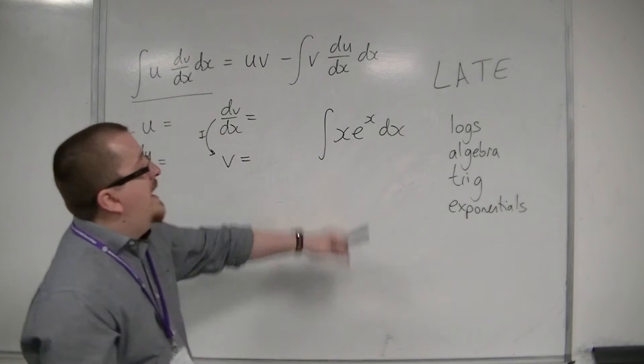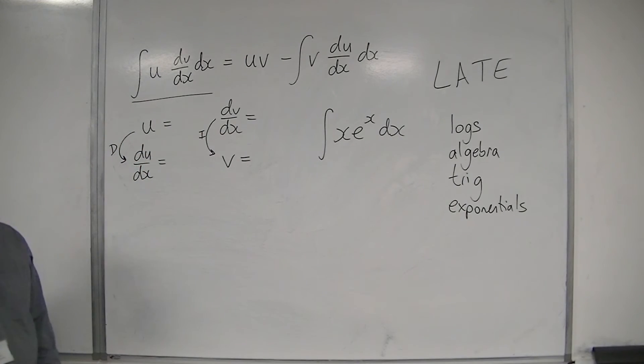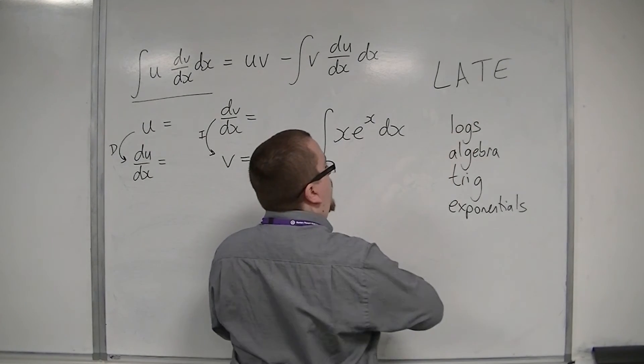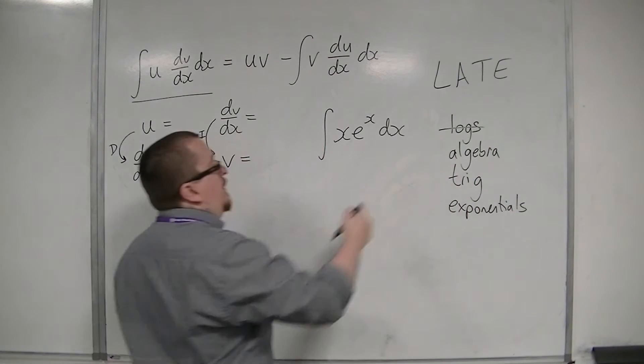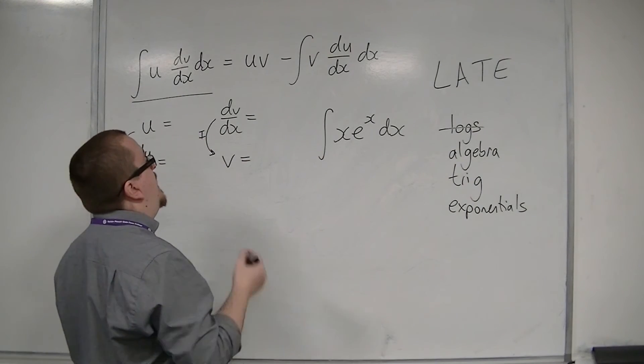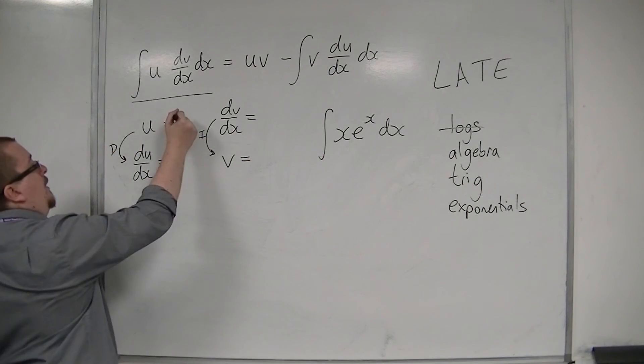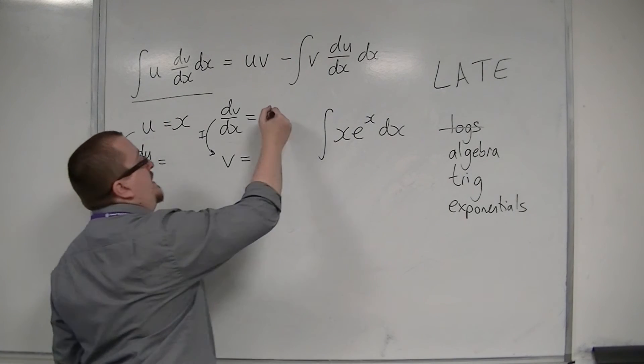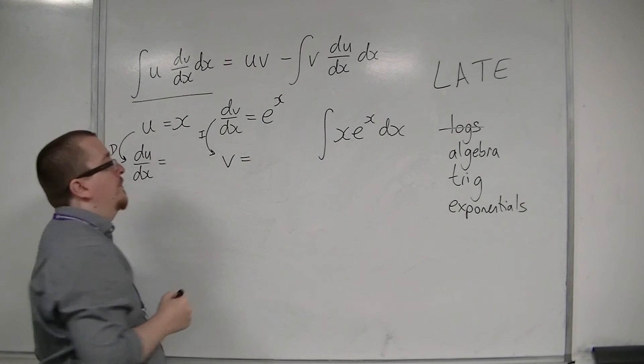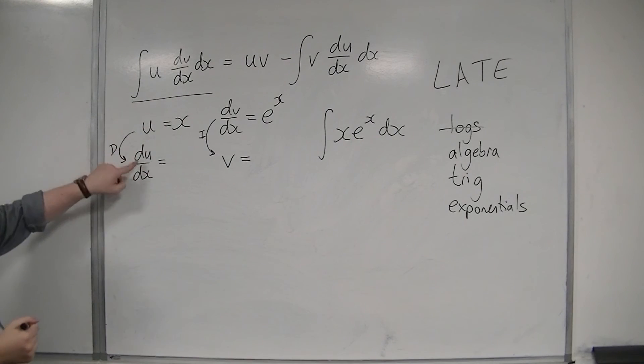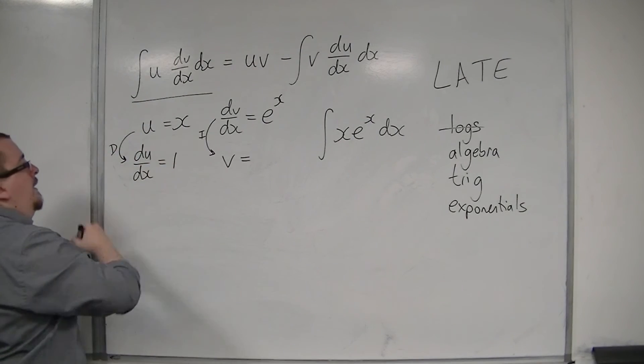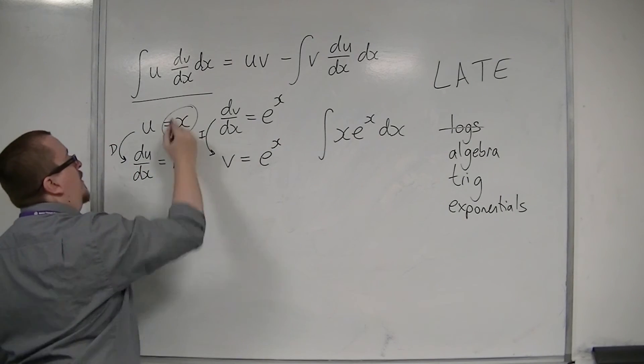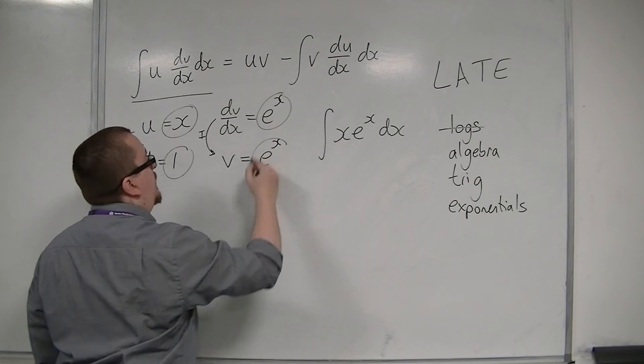So, when I'm looking at xe to the x dx, I must pick the x as the u, because there's no logarithms, so I can discount that. So, the algebra bit must be x. So, that's my x, and the dv by dx is what's left over, that e to the x. So, I differentiate u to get 1, and I integrate e to the x to get e to the x. And I now have my four pieces that I need.